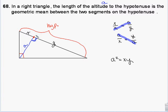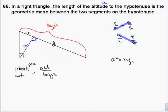To put it another way: short over altitude is equal to altitude over long, for the segment lengths short and long. So the altitude gets multiplied by itself, and the hypotenuse gets broken into two pieces that get multiplied by each other.